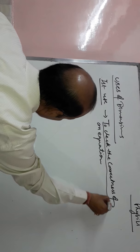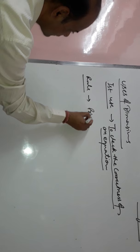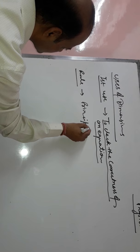To check the correctness of an equation, we use a rule known as the principle of homogeneity.